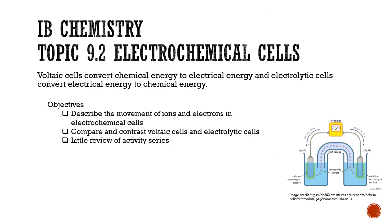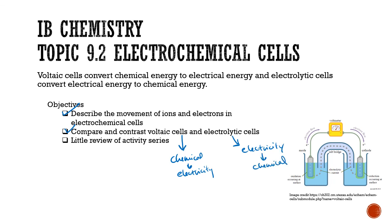The best reducing agent — the thing oxidized most easily — is zinc metal, because it is most likely to give away electrons. So zinc metal is the best reducing agent. We described the movement of ions and electrons in electrochemical cells, compared and contrasted voltaic cells (spontaneous chemical reaction produces electricity) and electrolytic cells (electricity forces a non-spontaneous chemical reaction), and reviewed the activity series. Well done — see you in class.